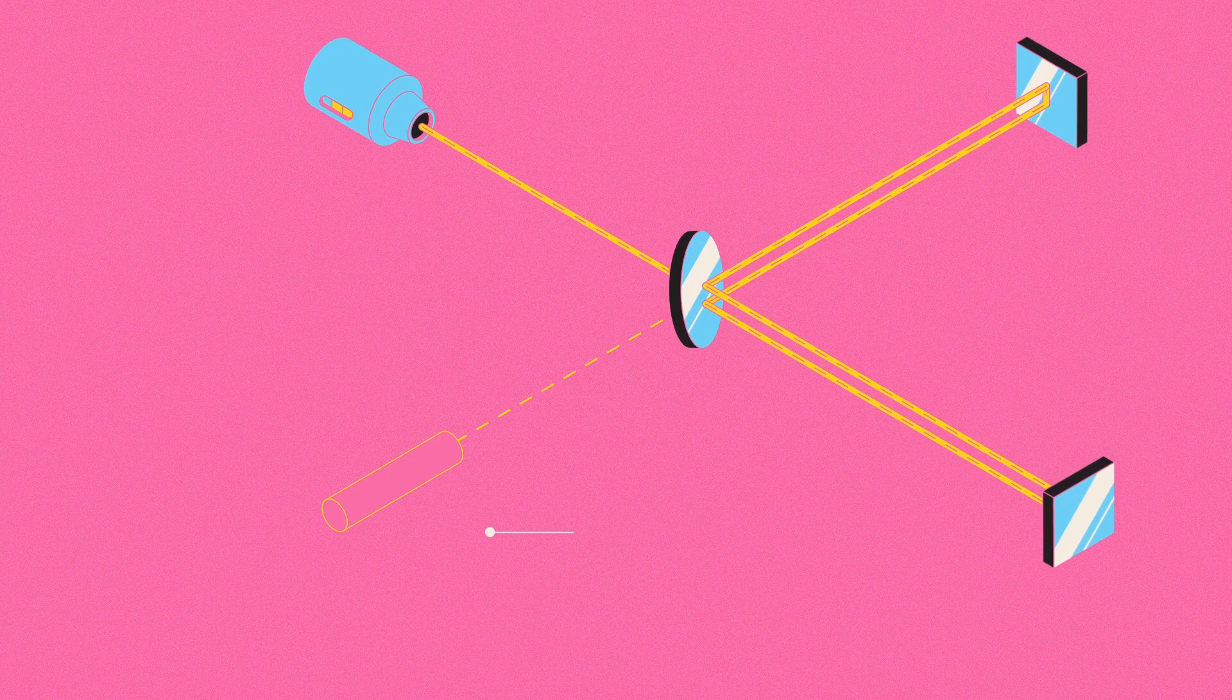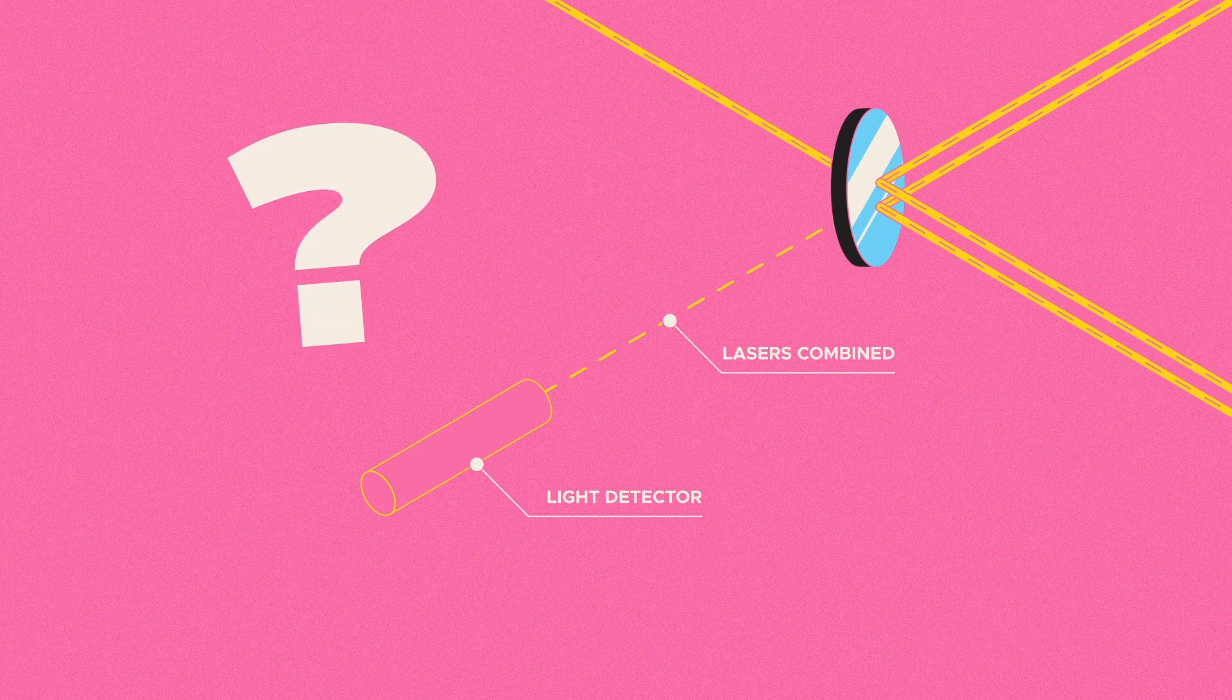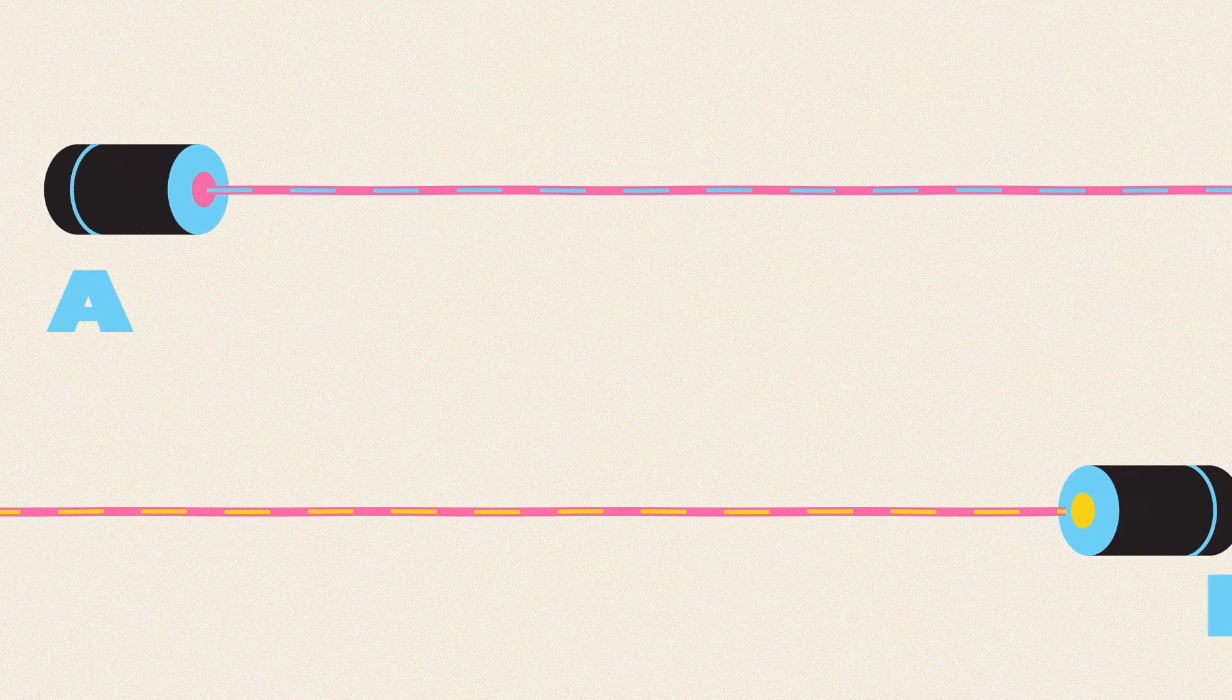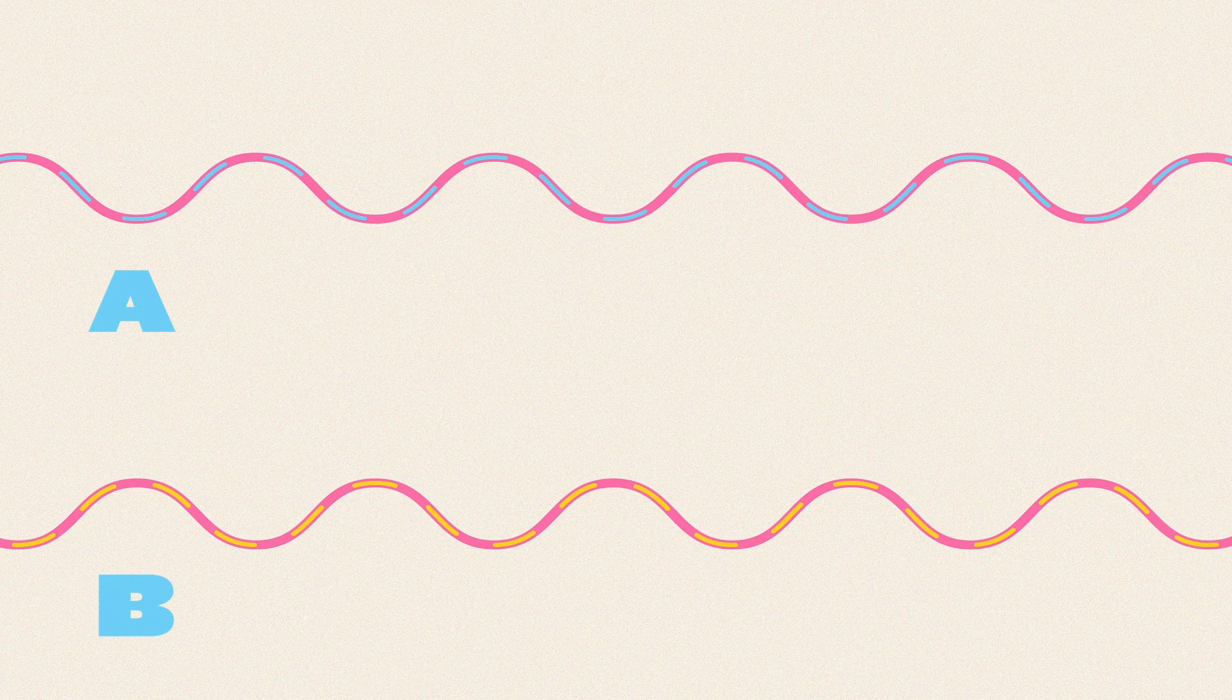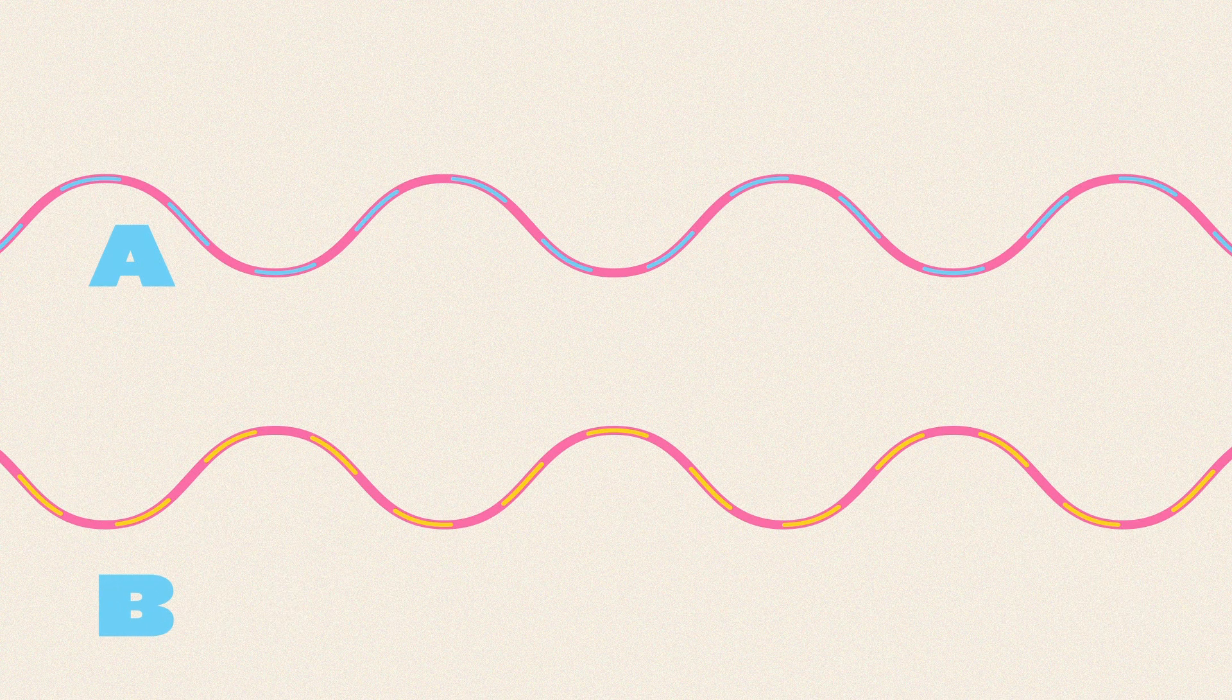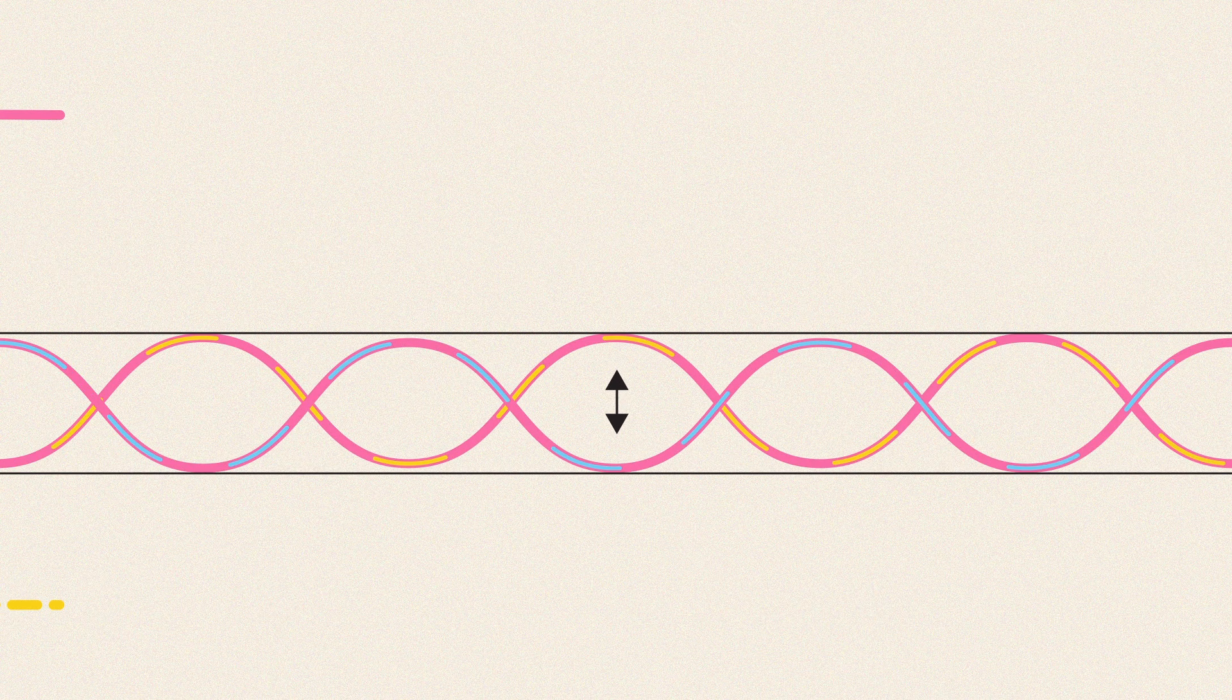Eventually, on arriving back at the beam splitter, the two lasers are combined. And here, something very cool happens. You see, lasers emit light waves. And if you combine light waves that have the exact same frequency but are perfectly out of phase, meaning the peaks and troughs of the two waves are exact opposites, they cancel each other out.